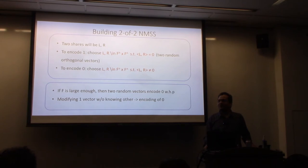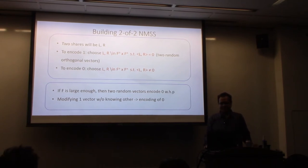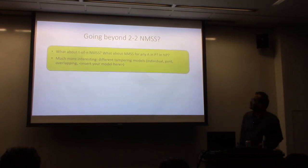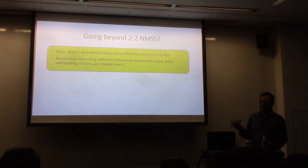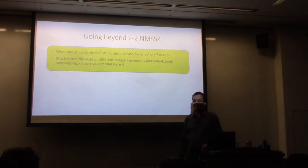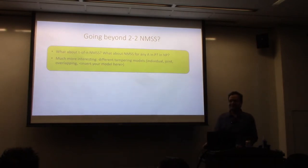Going from single-bit to multi-bit encoding requires a lot of work. For now, assume 2-out-of-2 non-malleable secret sharing exists. The question is: how can we build T-out-of-N non-malleable secret sharing?